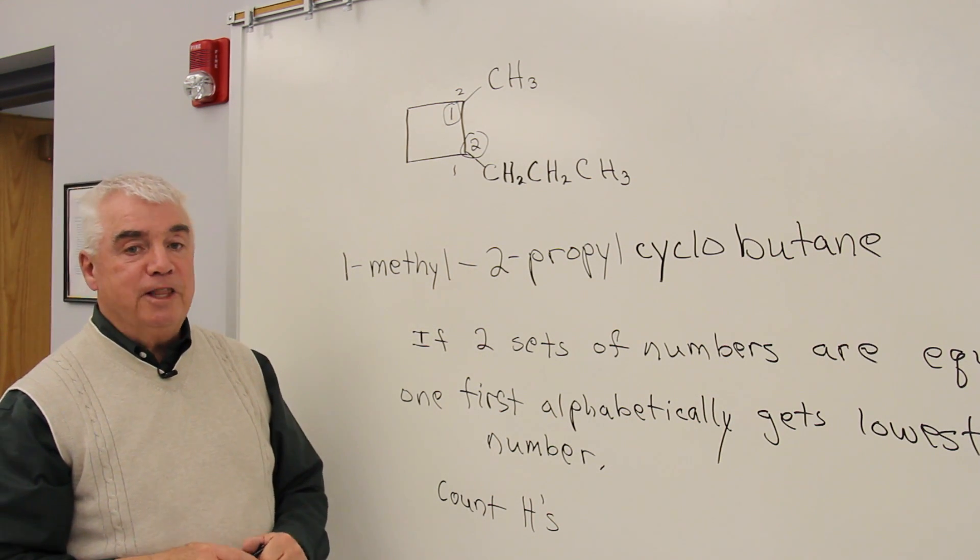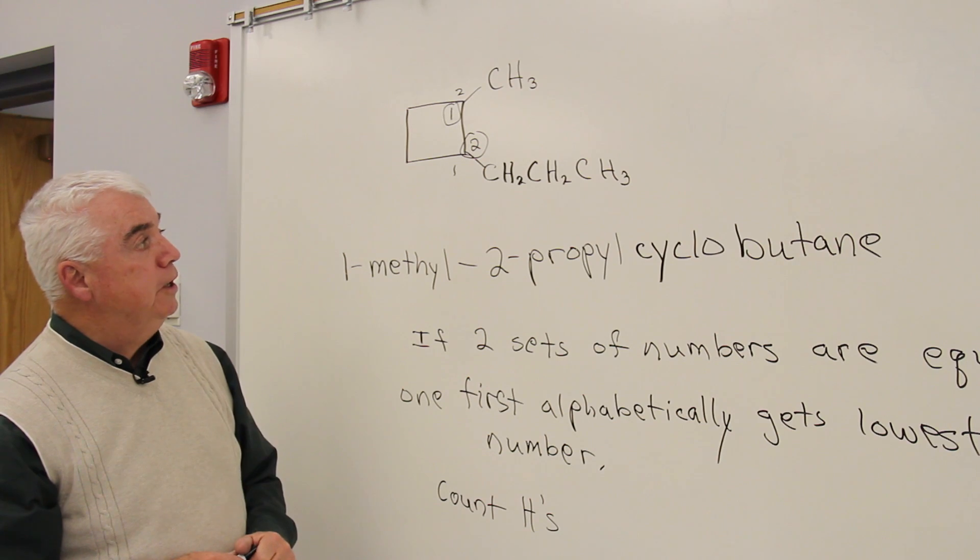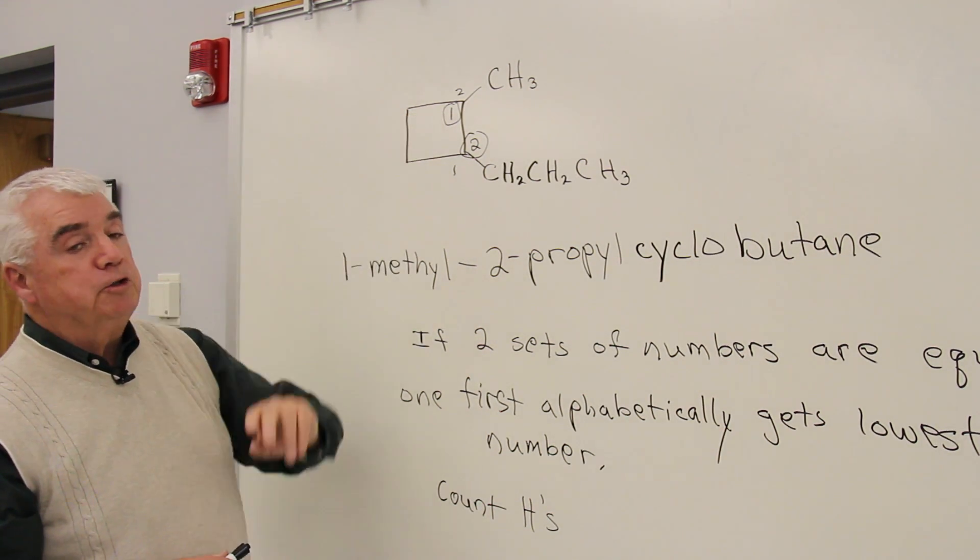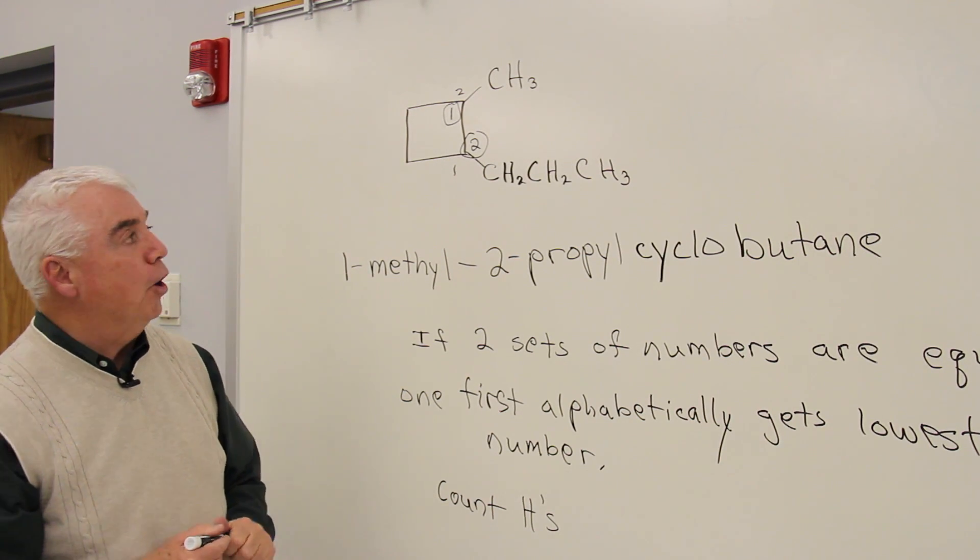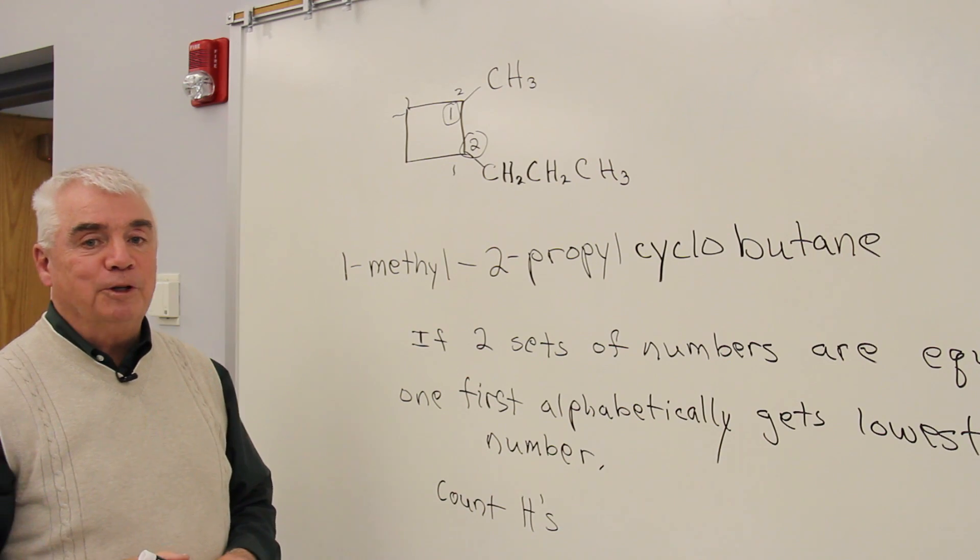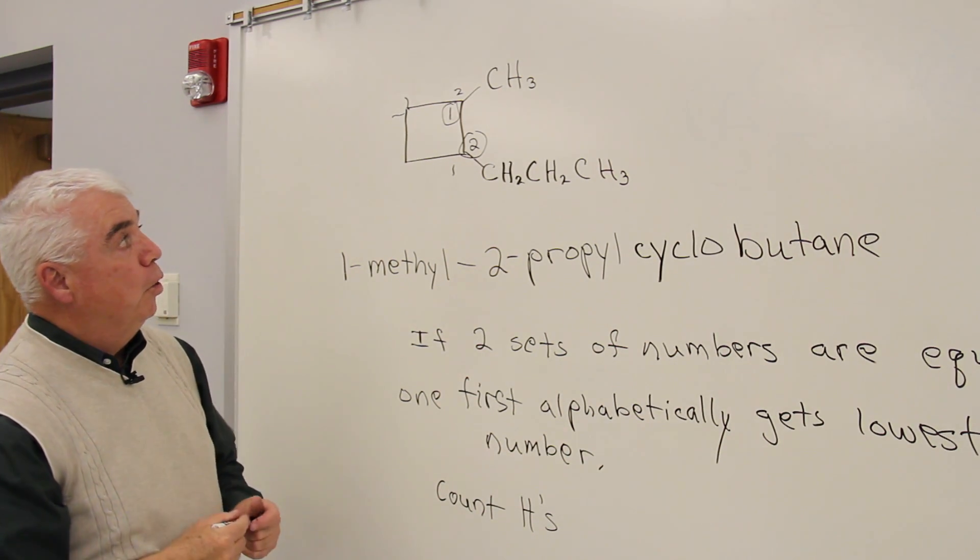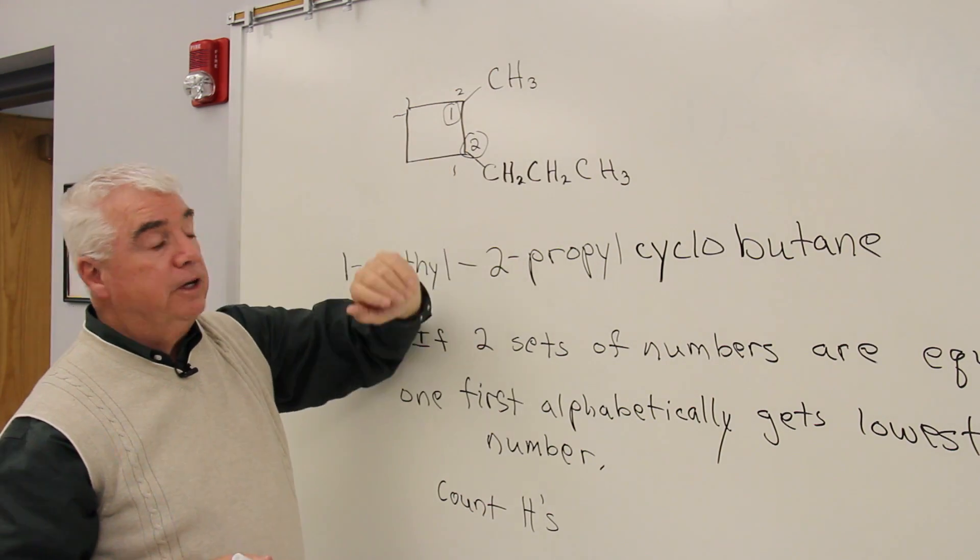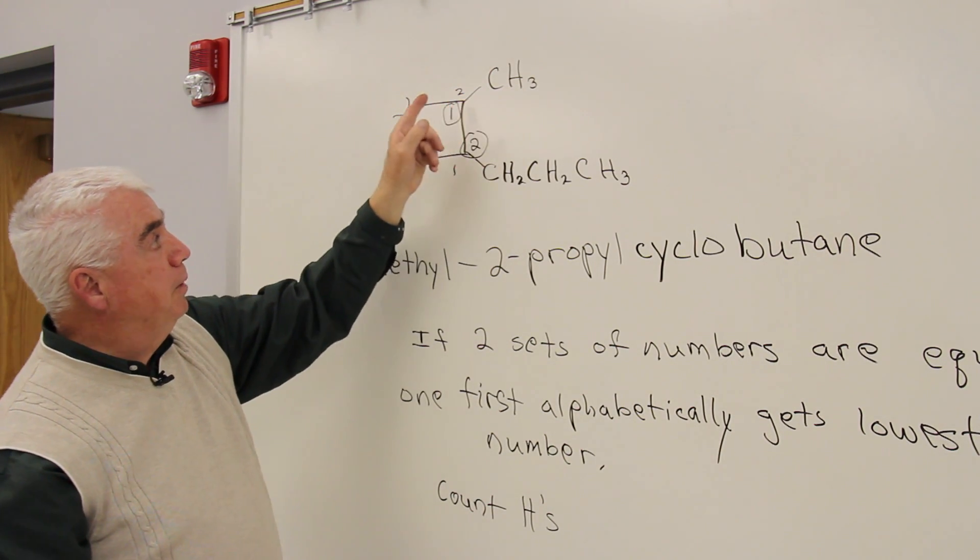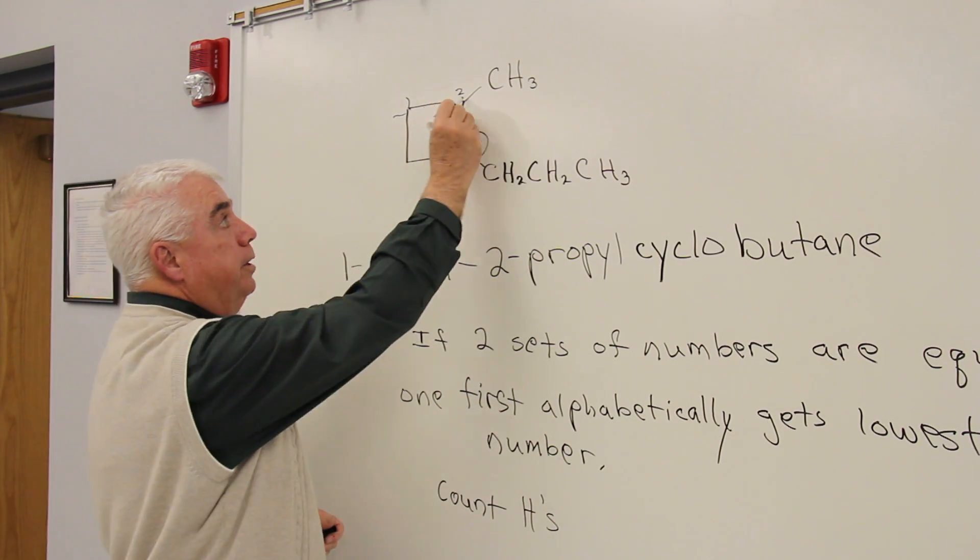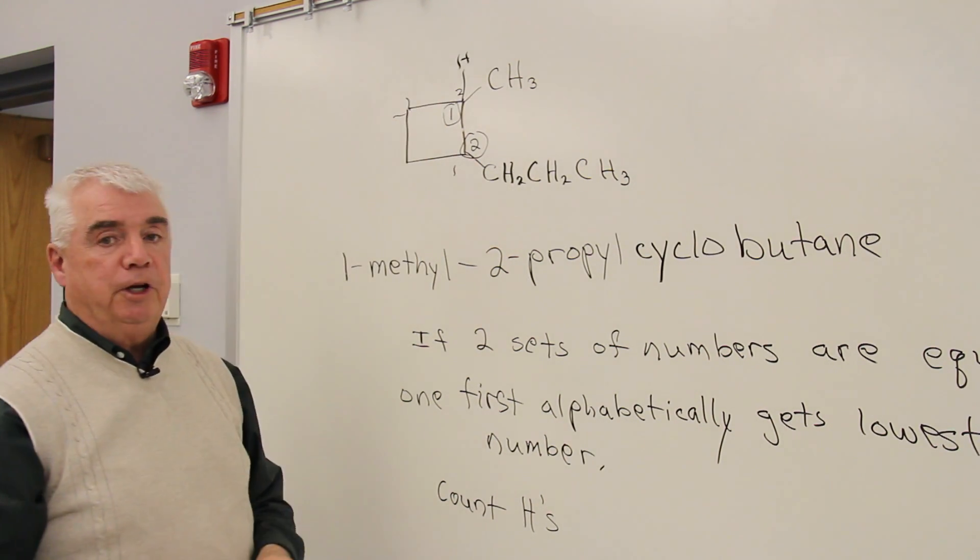Maybe one last thing we can do with this structure. Remember, for later chapters especially, when you see the intersection of two lines, that's a carbon, and there's still going to be two more hydrogens at that position. Or in this case, where I see a group is attached, there's a carbon bond, a carbon bond, a carbon bond. There's only one hydrogen attached at that position.